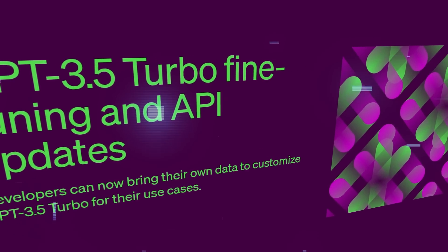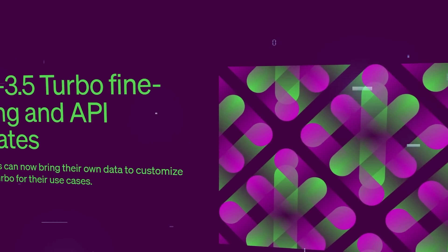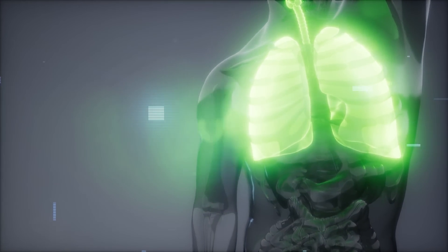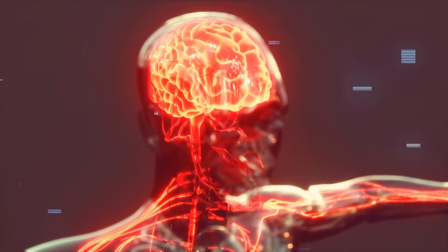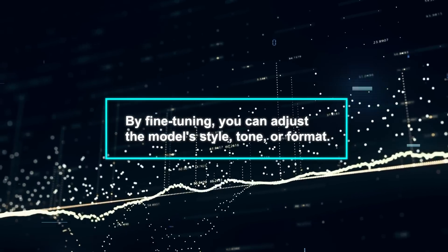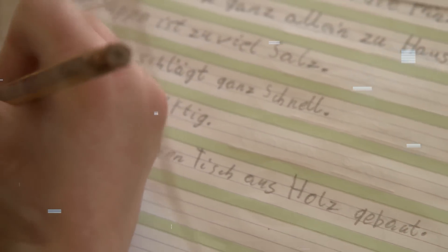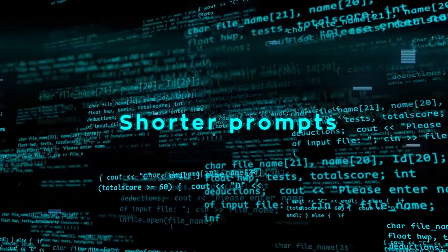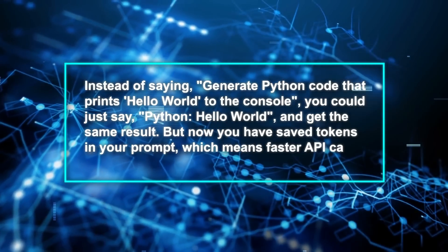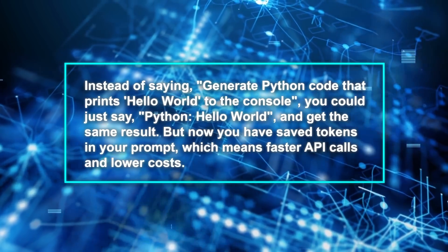Fine-tuning adjusts a neural network like GPT-3.5 Turbo to perform better on specific tasks. If you're building a health chatbot, you'd train GPT-3.5 Turbo on medical data to make its answers more precise. By fine-tuning, you can adjust the model's style, tone, or format. It can even make the model respond only in German if trained with German data. This process also lets you use shorter prompts — instead of saying 'generate Python code that prints Hello World to the console,' you could just say 'Python Hello World' and get the same result.